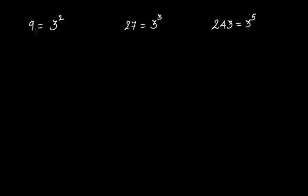If 9 can be written as 3 squared, the square root of 9 is equal to 3. If 27 can be written as 3 raised to the power of 3, then the cube root of 27 is 3. If 243 can be written as 3 raised to the power of 5, then the fifth root of 243 is 3.